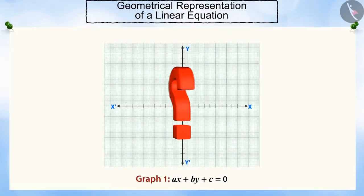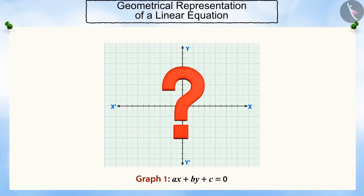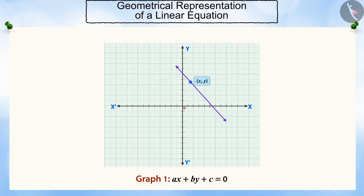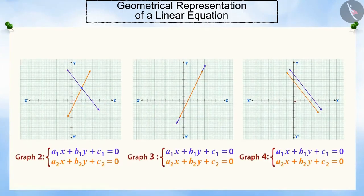Can you tell me what is the geometrical representation of a linear equation in two variables? Absolutely right — it is a straight line. Each solution of this linear equation is a point on the line denoting the equation. So we can say that a pair of linear equations in two variables will denote a combination of straight lines in geometrical form.